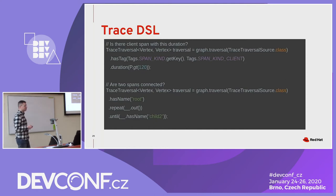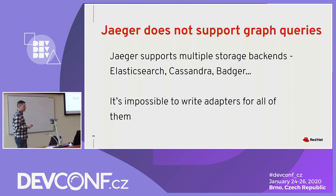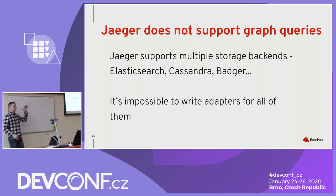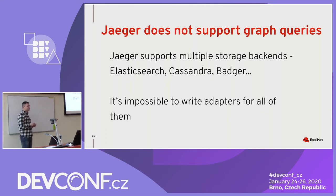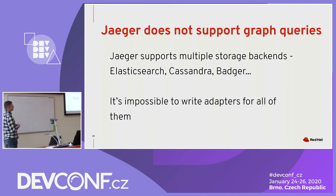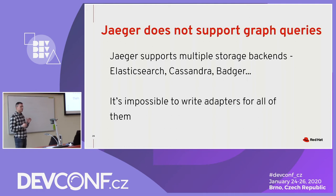Jaeger doesn't support graph queries, so you cannot write a complicated Gremlin query and run it against our database or query service — which is limiting when you want to run analysis on historical data. We're thinking that maybe we will never support the full graph API in our services, so instead we'll define the common use cases and implement a subset of the Gremlin API.